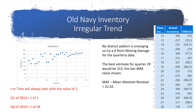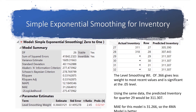Now let's compare this with another model called simple exponential smoothing. When I did this model, I got an R-squared value of 33.16%. The MAE in this model is 31.26. Since this is larger than the previous model, I would go with my smooth moving average in order to predict inventory.